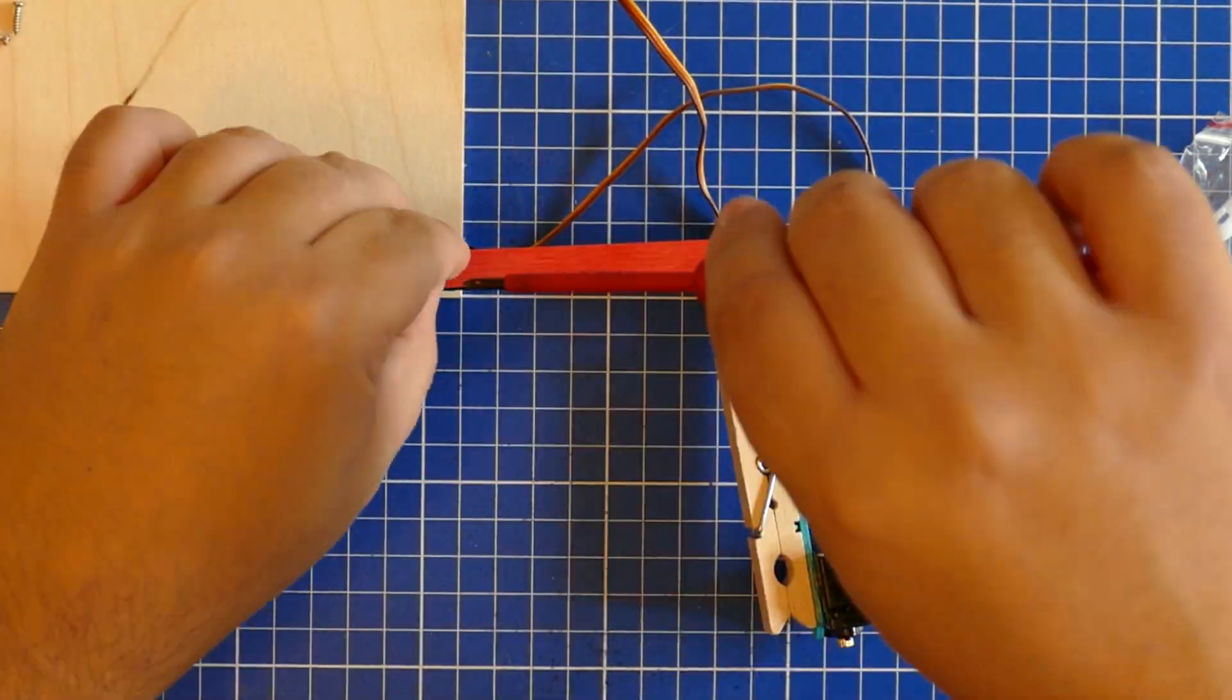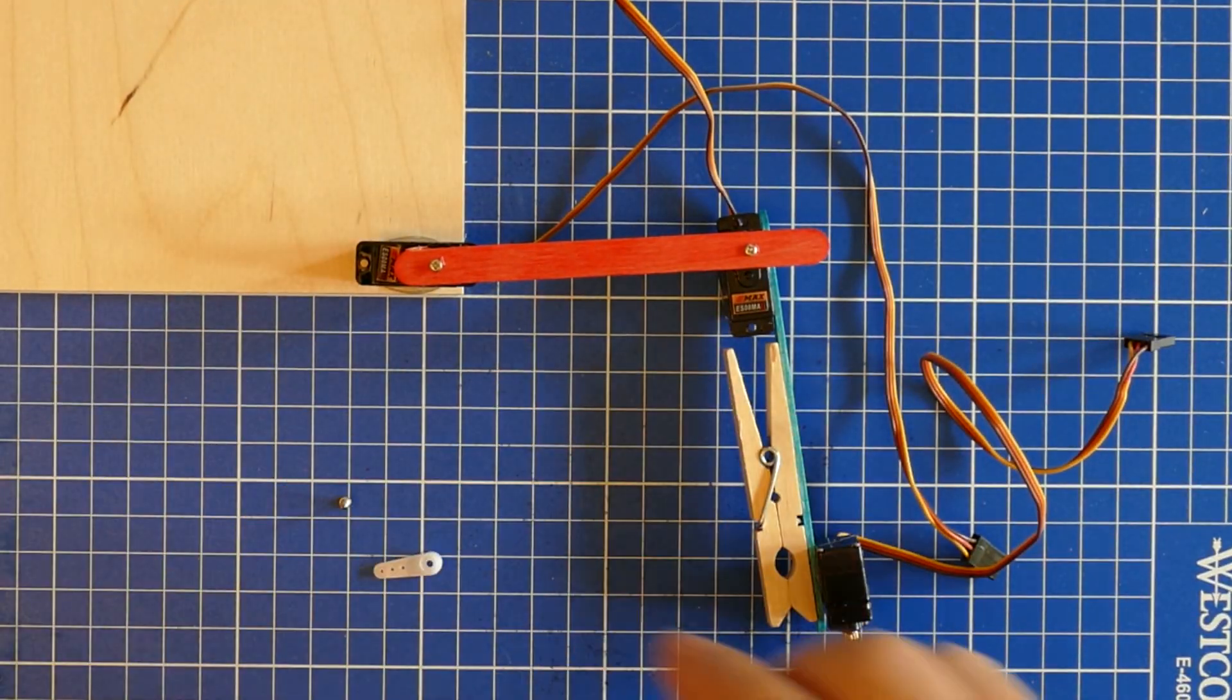You can now screw everything together, but you might want to remove and adjust the arms when you come to calibrate it.